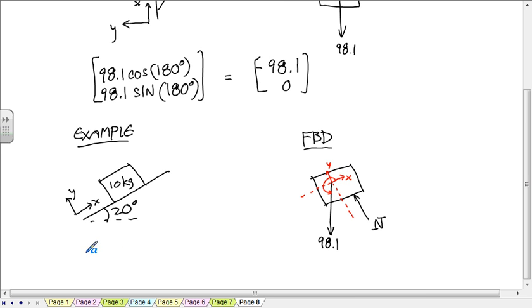And so the weight is 98.1 times the cosine of 250, 98.1 times the sine of 250.